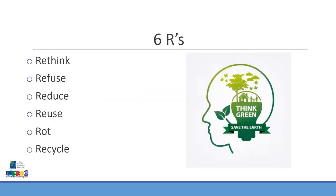You might be familiar with the common three R's of waste reduction — reduce, reuse, and recycle — but we educate people on all six R words. This list is actually a prioritized list: it starts with rethink, and the last thing you should be doing is recycling. We're going to explore rethink, refuse, reduce, reuse, rot, and recycle.